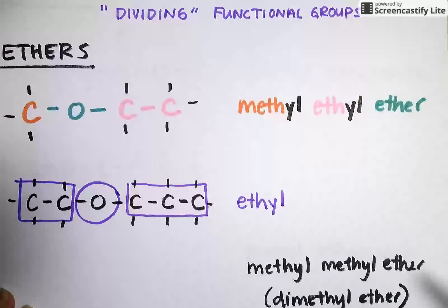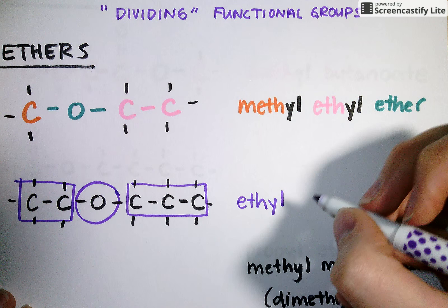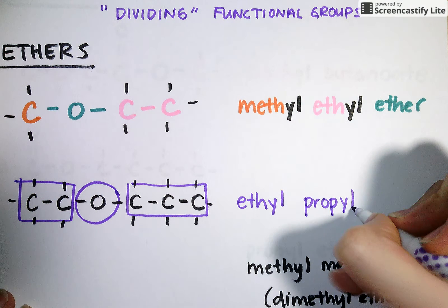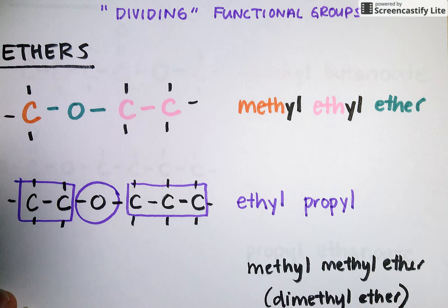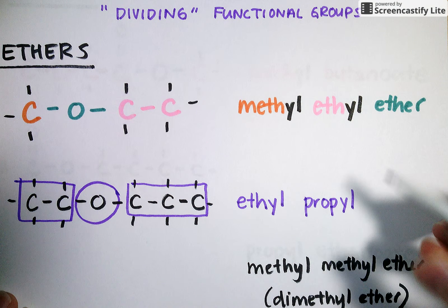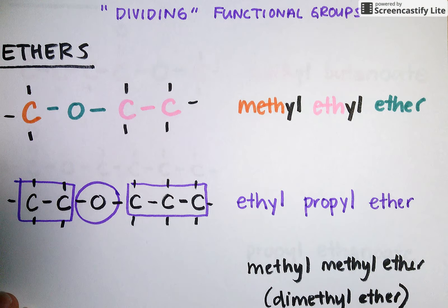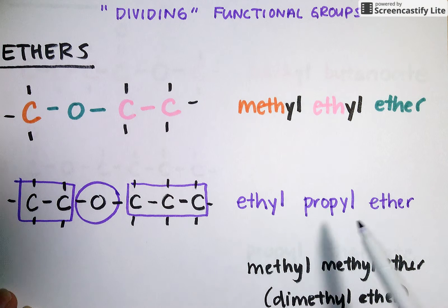Here, I've got three carbons, so I'm going to use the prefix prop and end it with yl to show that it's an attachment. And these two attachments are attached to my ether functional group. So I'm going to end with the name ethyl propyl ether.